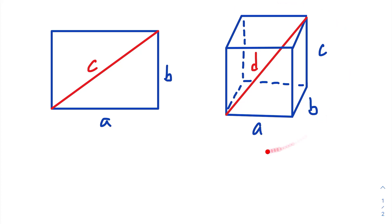in this rectangular prism, this red diagonal with length D is a space diagonal because it connects two vertices of the rectangular prism that are not on the same face. So we want to find D.